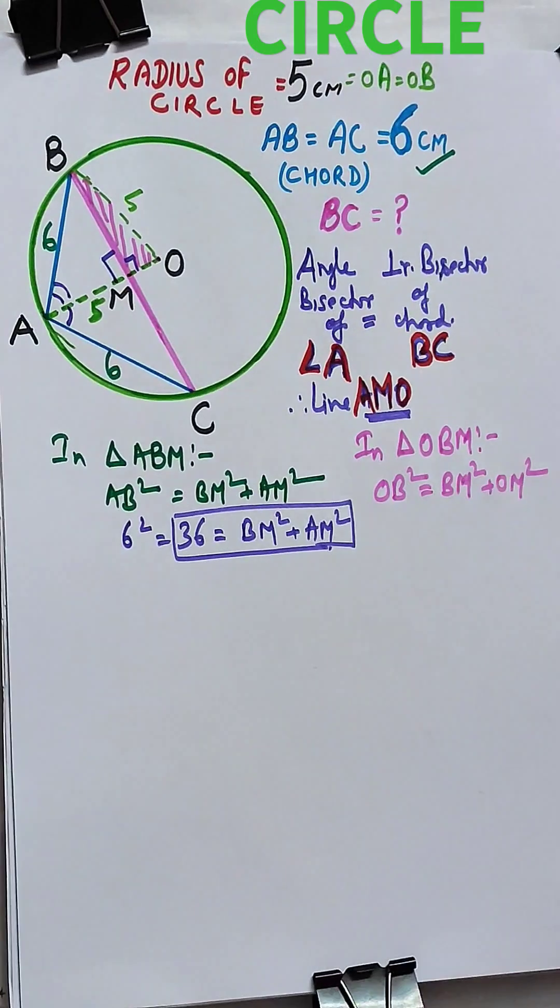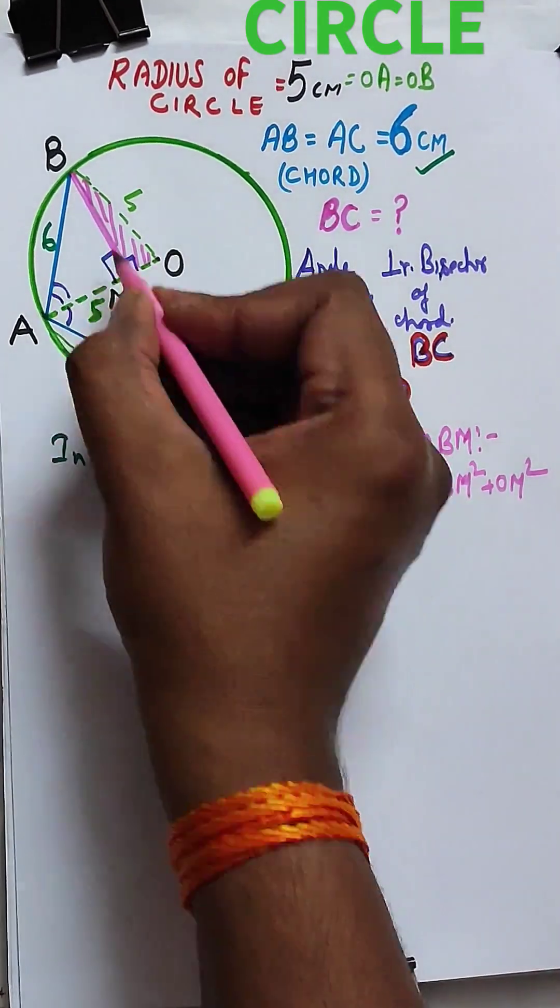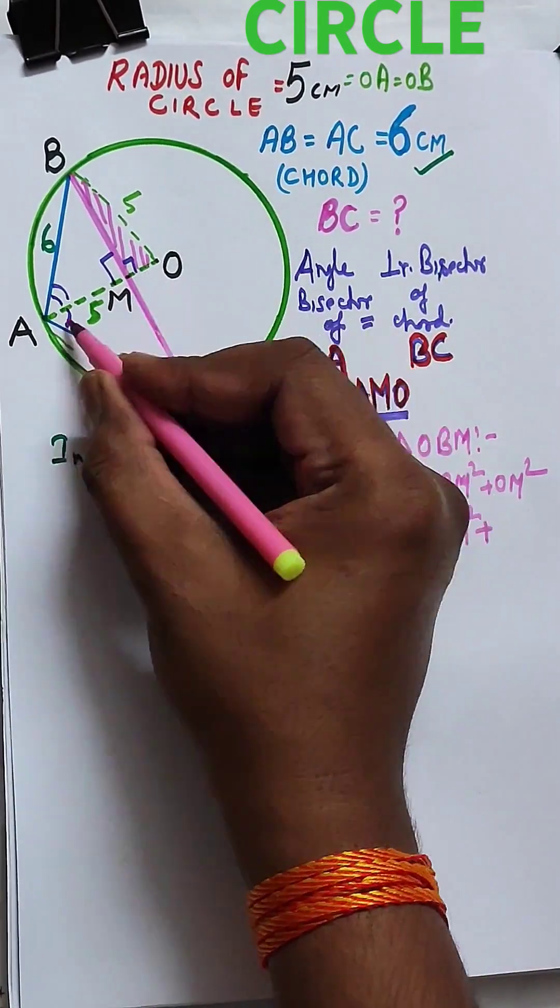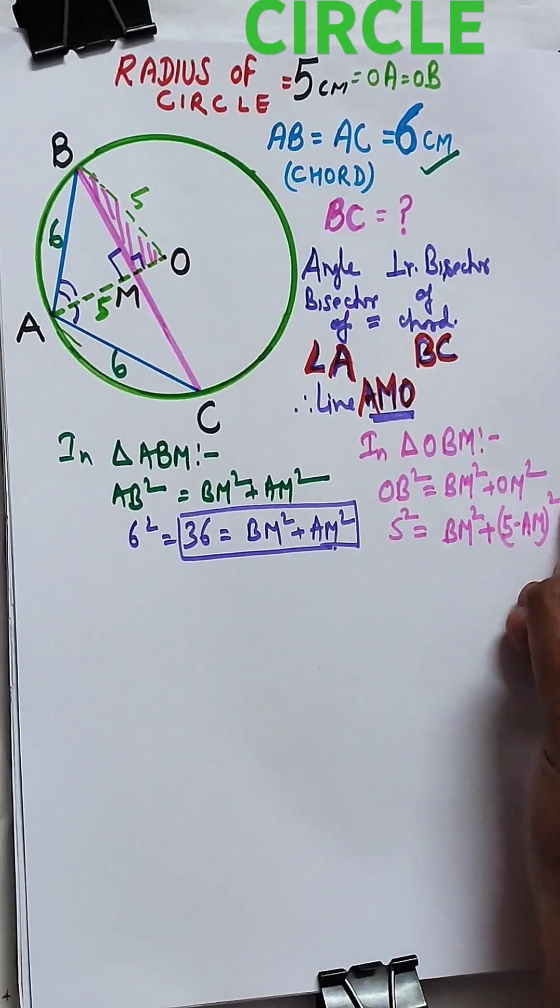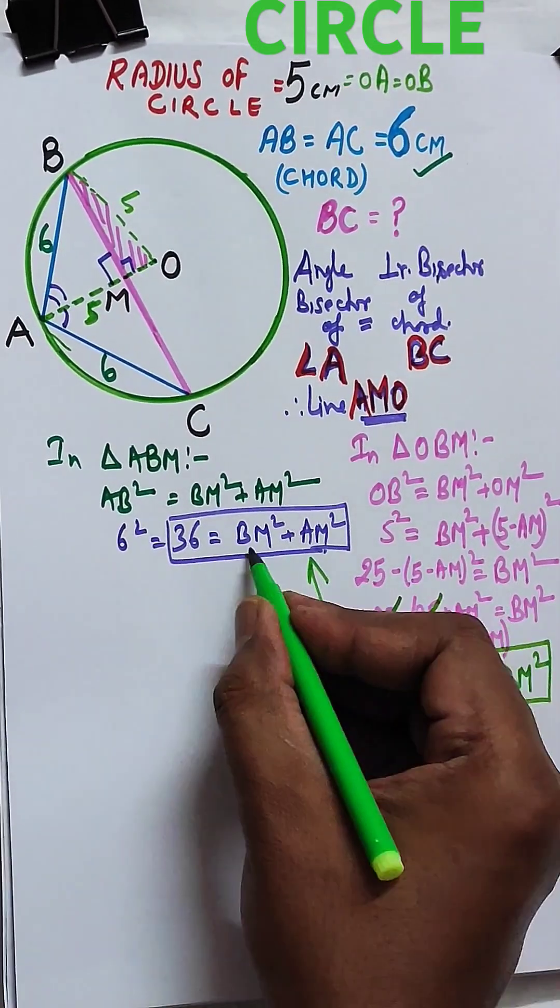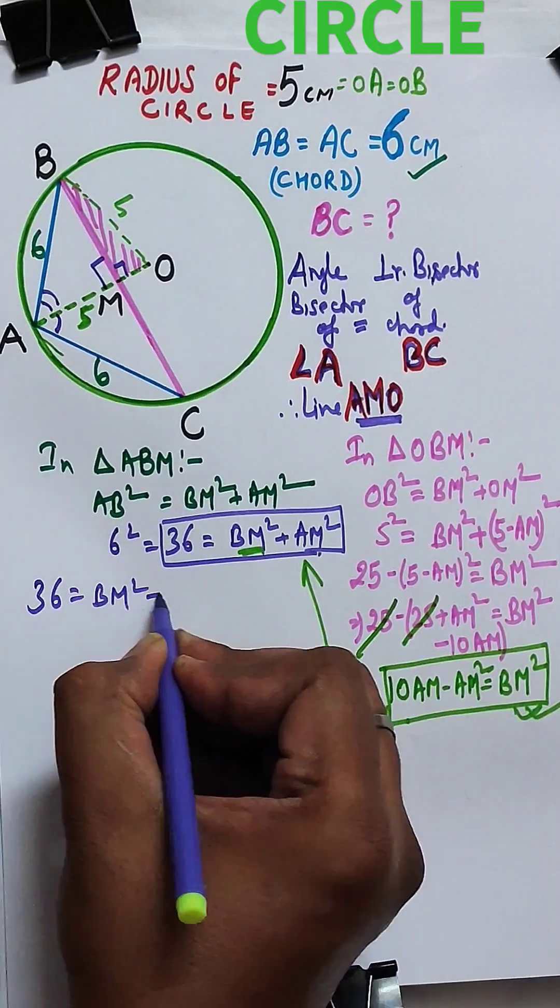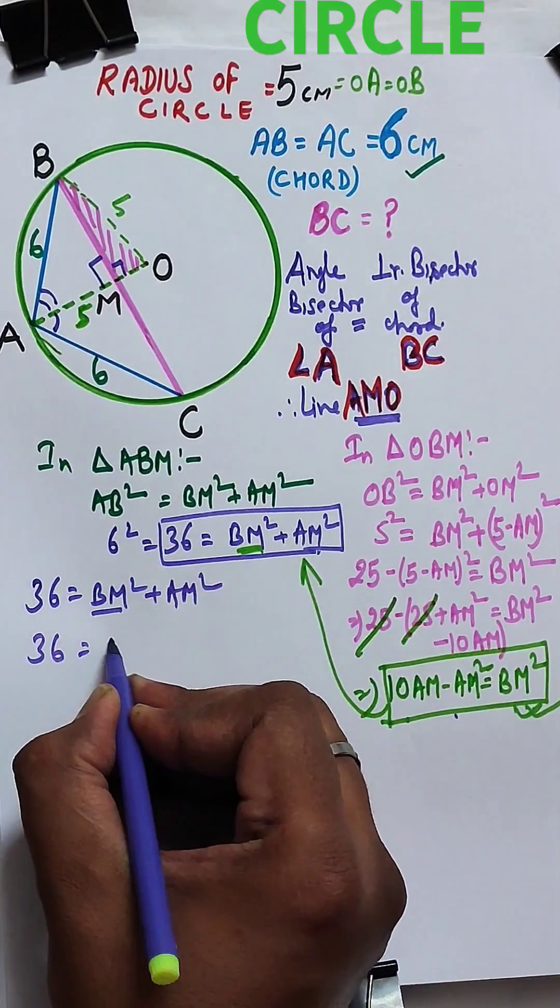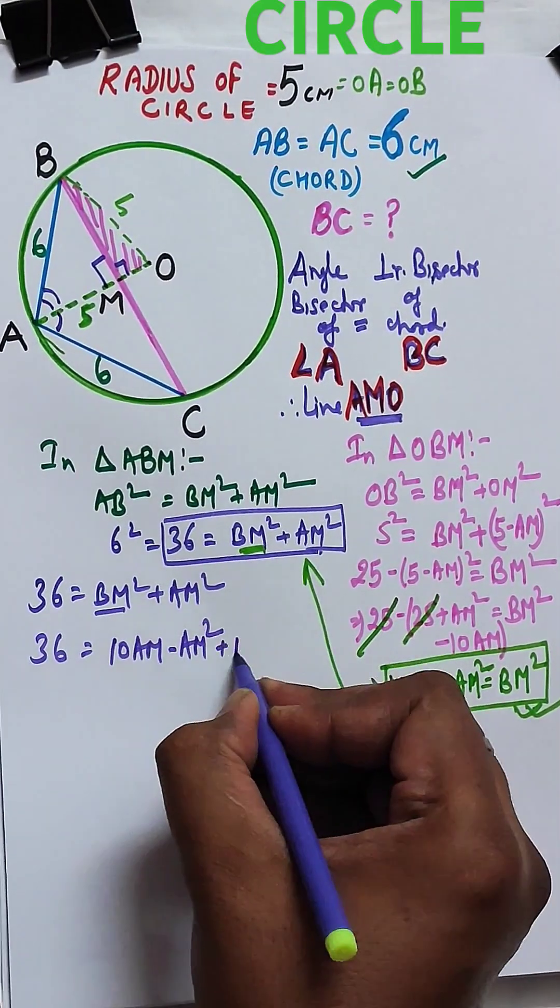Similarly, in triangle OBM, we get another relation of BM and AM. Substituting the value of BM squared from one equation into the other, we get the value of AM as 3.6 cm.